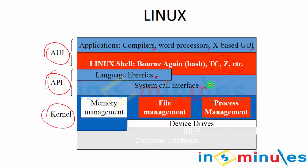As shown in the diagram, the kernel is responsible for memory management, file management, and process management — all management activity comes under the kernel. The kernel itself is a monolithic kernel, much similar to the Unix kernel itself.